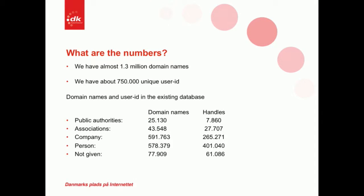What are the numbers? We have 1.3 million domain names and 750,000 unique user IDs. About half we can match to the actual registers, but the other half requires emails or other contact methods. Some registrants don't even have an email on record, so we have to contact them by letter. It seems ironic that in internet times, a domain name business has registrants without email — but in the early days, we allowed registrations without one.